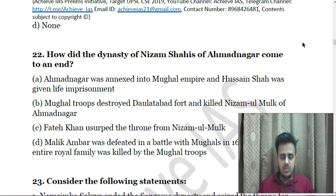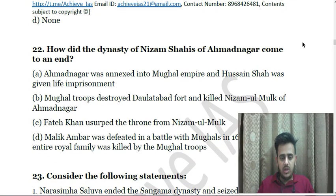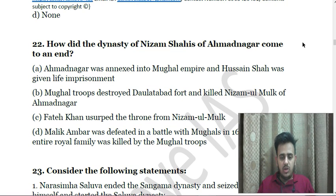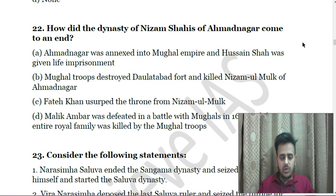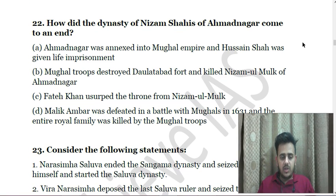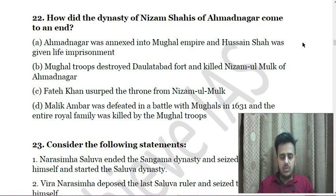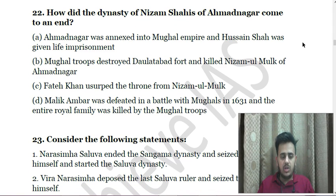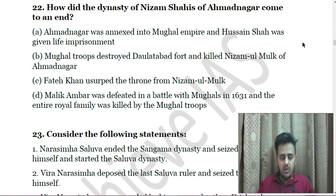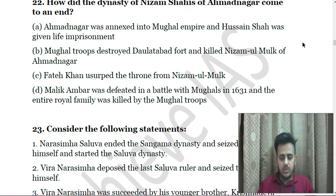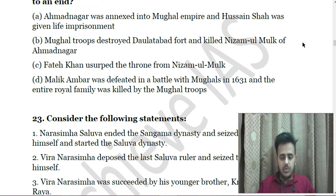Next: How did the dynasty of Nizam Shah of Ahmednagar come to an end? A. Ahmednagar was annexed into the Mughal Empire and Husayn Shah was given life imprisonment. B. Mughal troops destroyed Daulatabad Fort and killed Nizam-ul-Mulk of Ahmednagar. C. Fateh Khan usurped the throne from Nizam-ul-Mulk. D. Malik Ambar was defeated in a battle with Mughals in 1631 and the entire royal family was killed by Mughal troops.